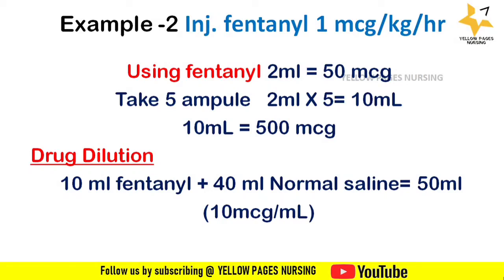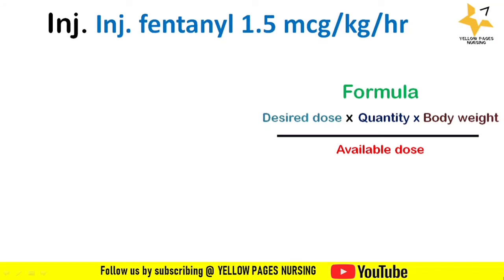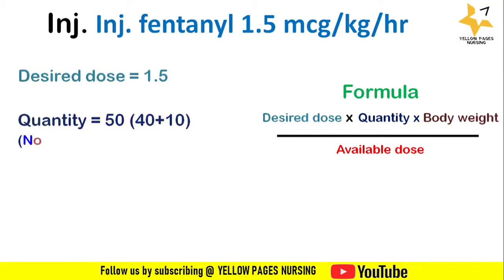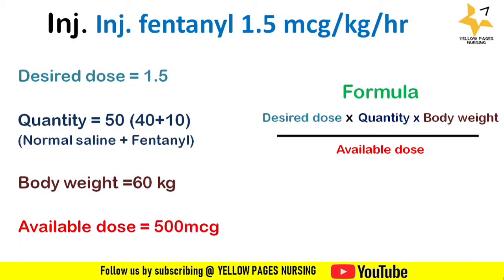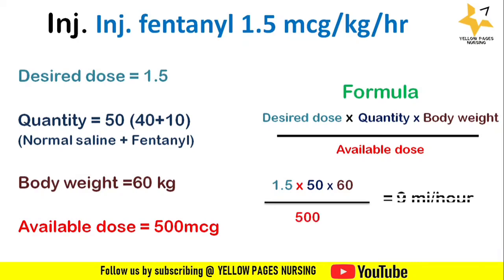The given body weight of the patient is 60 kg. Applying the formula: desired dose is 1.5, quantity is 50 (40 ml normal saline + 10 ml fentanyl), body weight is 60 kg, and available dose is 500 micrograms. Applying all values into the formula gives the answer: 9 ml per hour.